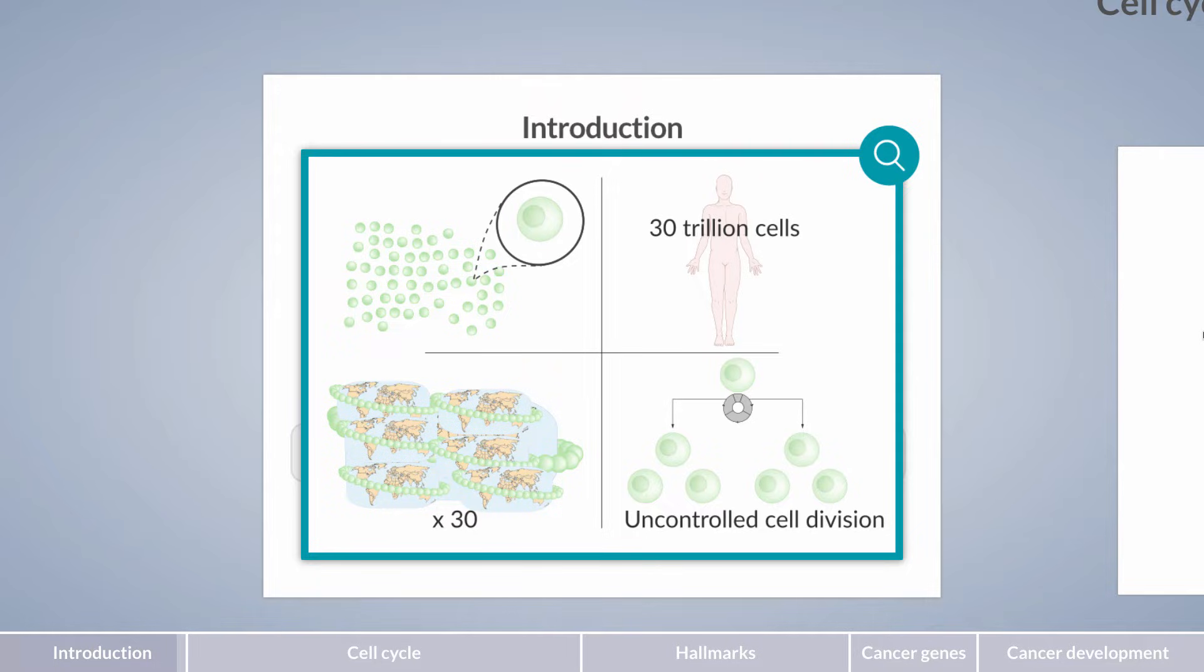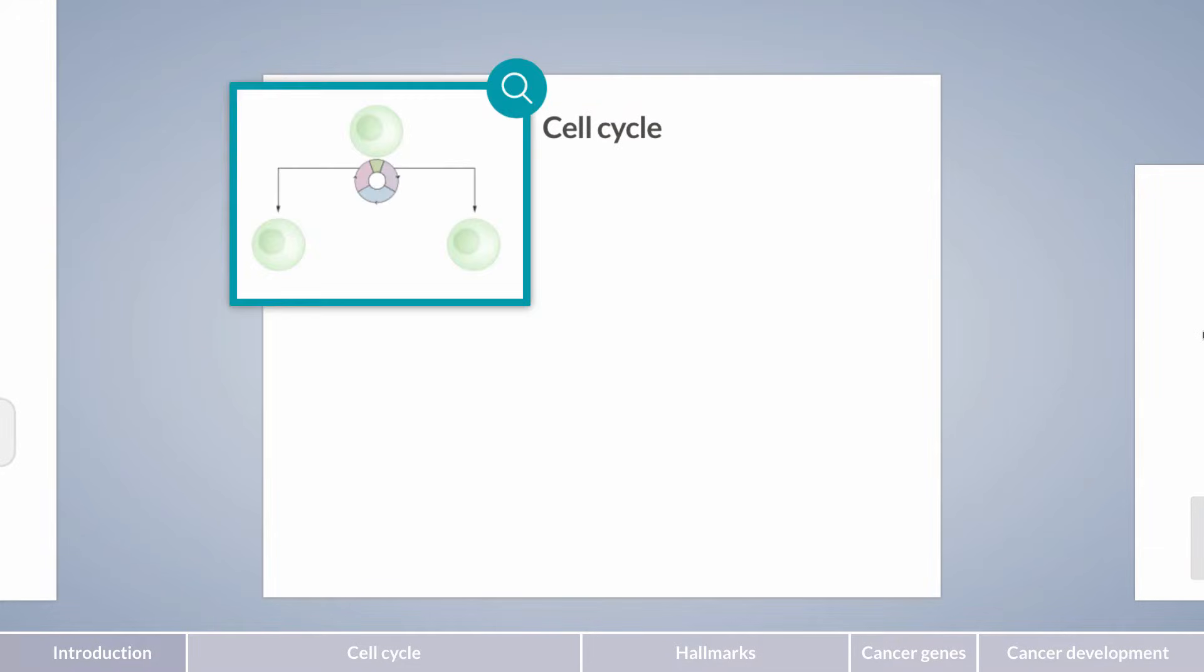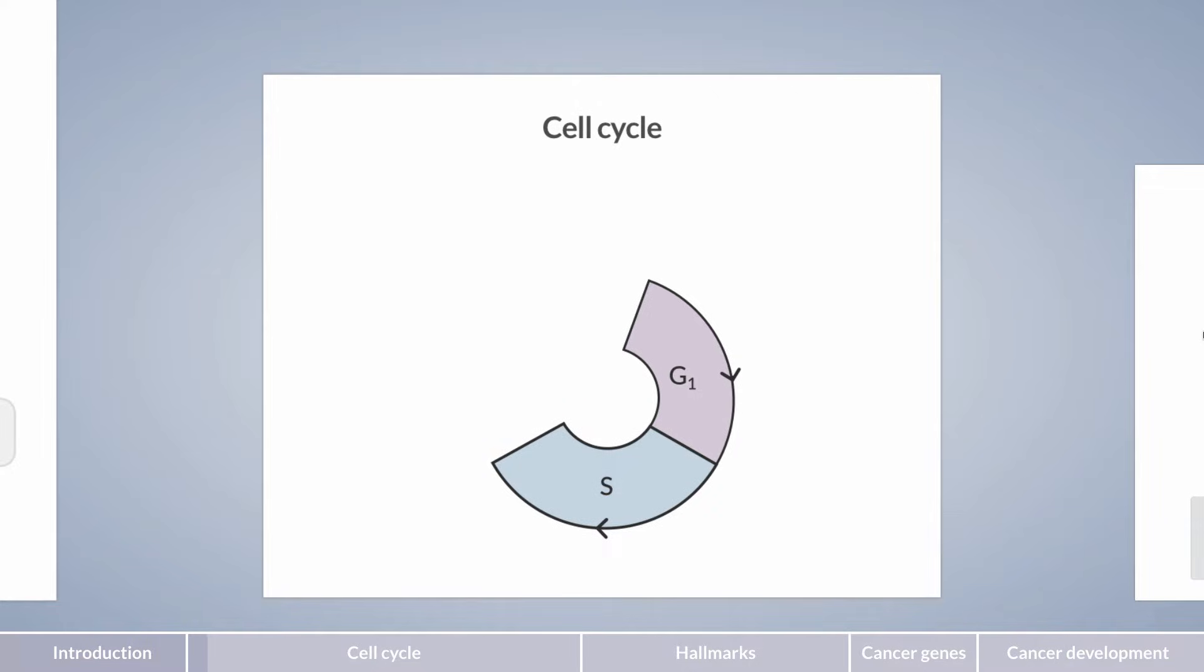Let's start by having a closer look at the cell cycle and its phases. Cell division results in the formation of two daughter cells from a single parent cell over several phases. The cell cycle is composed of four phases: the G1 phase, the S phase, the G2 phase, and the M phase.